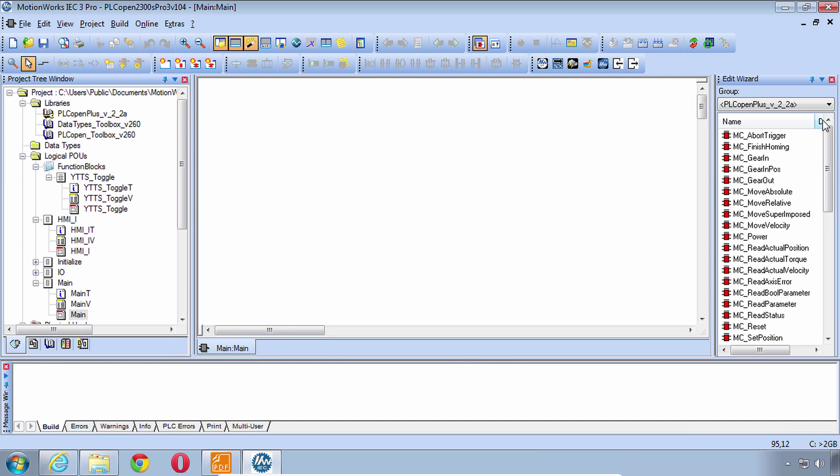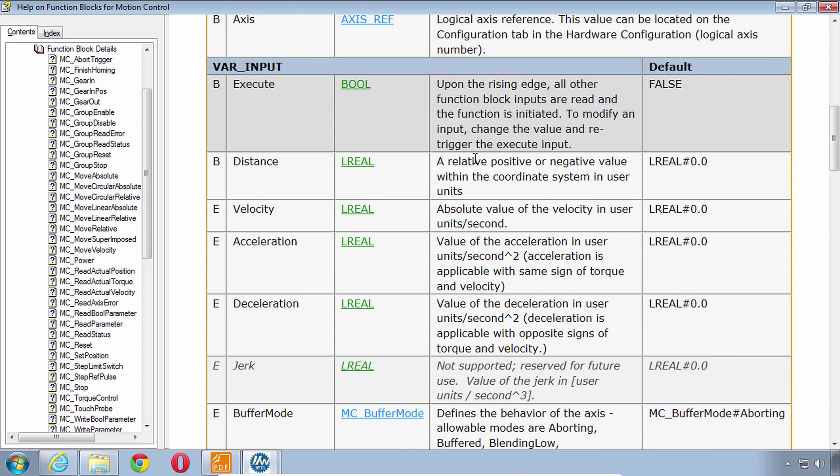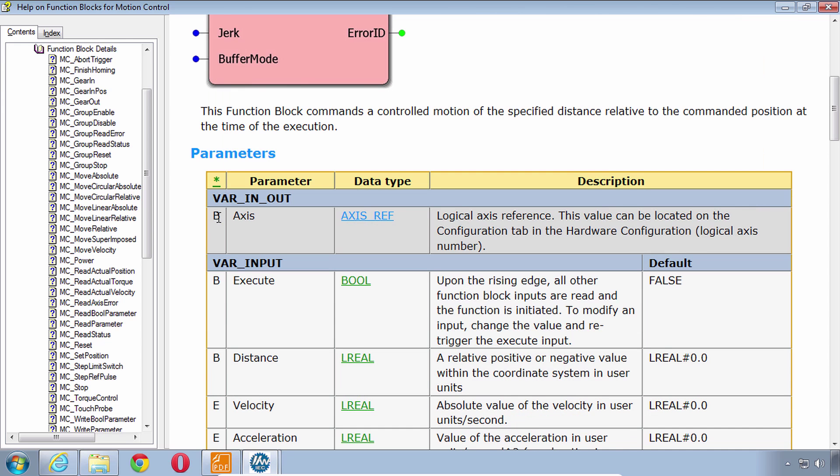You can go to PLCopen. You do have to have one of the code worksheets open in order to see this group. So we can even look at the help without adding it to the code. Right click help and here we see the help for MCMoveRelative with default listed and that is the initial value. You'll notice that the default for some of these like velocity excel and decel, we said it had to be greater than 0 and the default is 0, so you will get an alarm if you don't connect Velocity XL and decel because the default is not a valid entry. This is done intentionally just for safety.